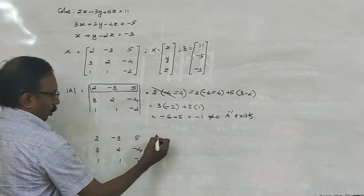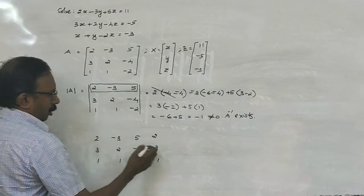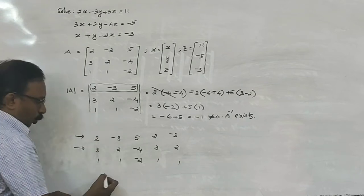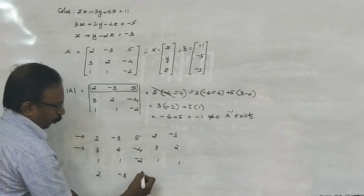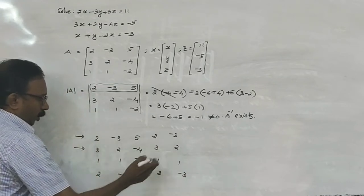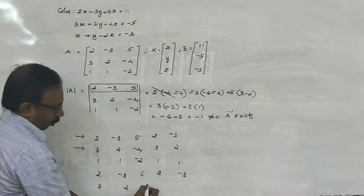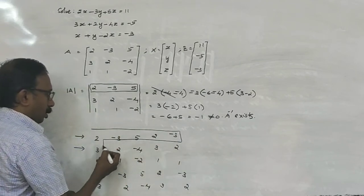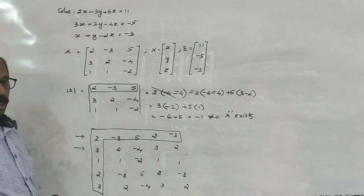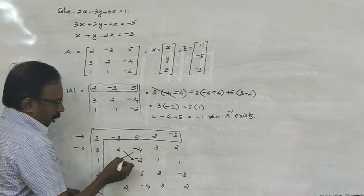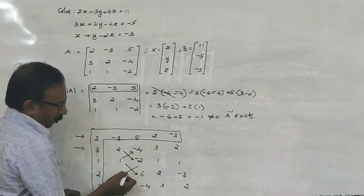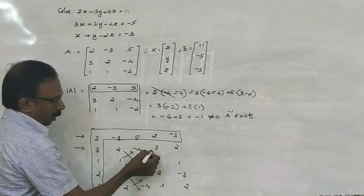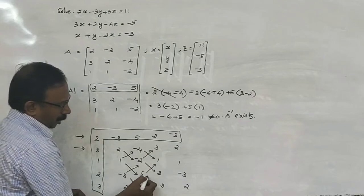So: 2, 3, 1; minus 3, 2, 1. Now, these two rows, rewriting rows again. So: 2, minus 3, 5, 2, minus 3; second row is 3, 2, minus 4, 3, 2. Now, eliminate first row. These elements, we are eliminating. Now, taking the determinants in column-wise and write the elements of the cofactors in the rows.